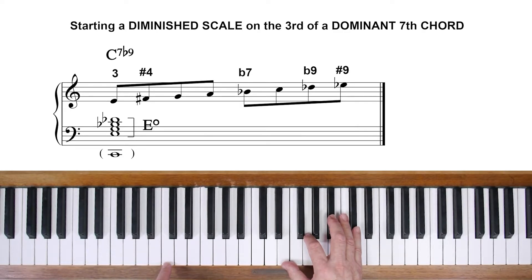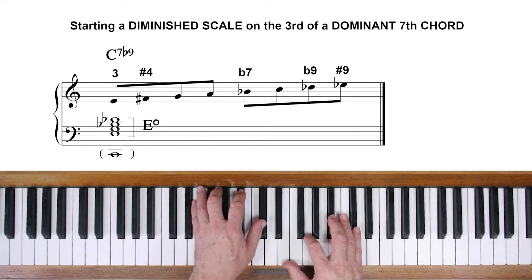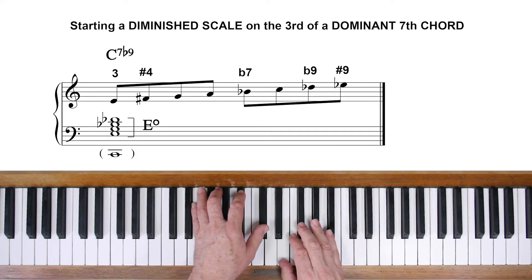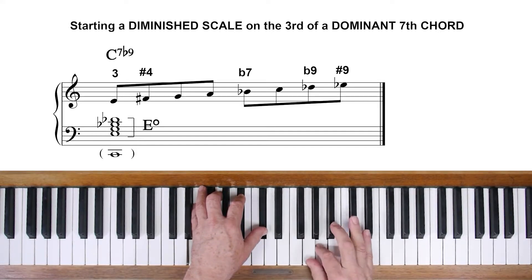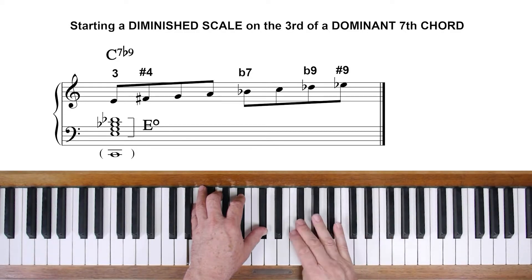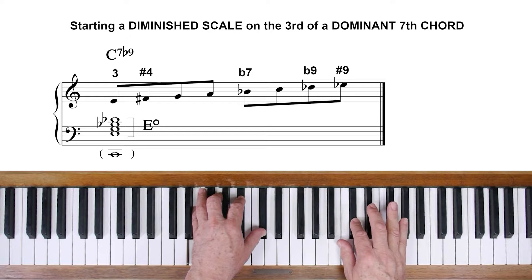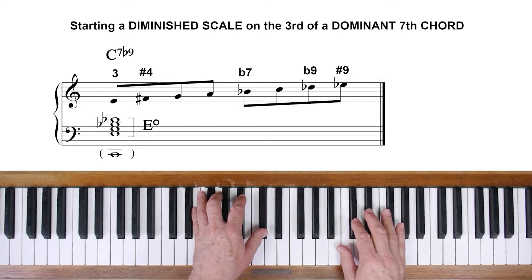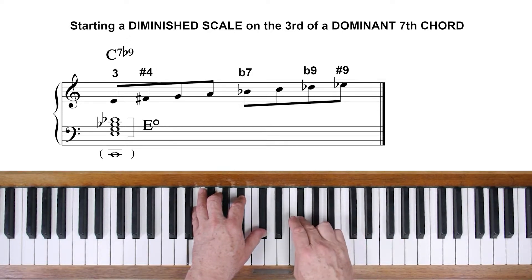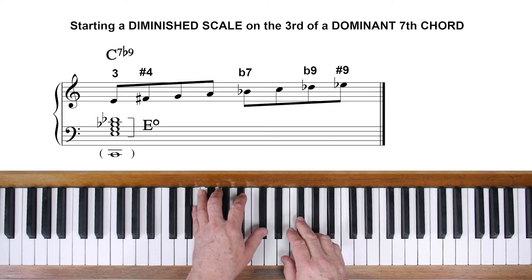Let's look at what notes this gives us. I'll play the chord in the left hand, and here's the E diminished scale. You can see that as well as the flat nine, the scale gives you the sharp nine. Both sharp and flat nine, in fact. It also gives you F sharp, which is the sharp 11 or the sharp four. You can call it either of those. So you can use the scale over C7 sharp nine and C7 sharp 11, as well as C7 flat nine.